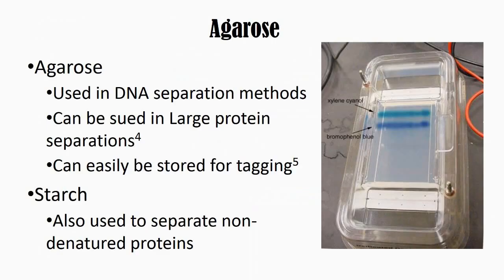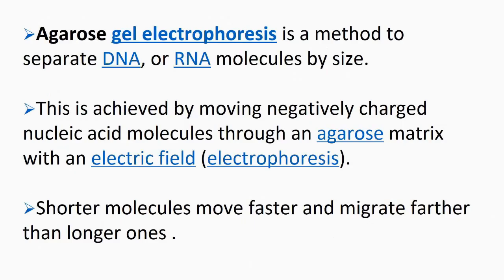Agarose gel electrophoresis is a method to separate DNA or RNA molecules by size, by moving negatively charged nucleic acid molecules through an agarose matrix with an electrical field — electrophoresis. Shorter molecules move faster and migrate farther than longer ones.